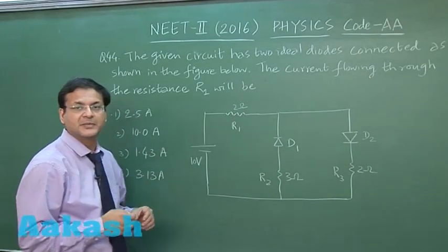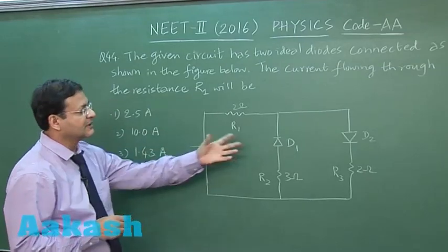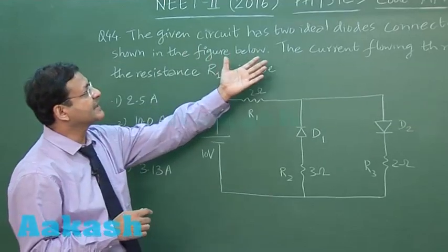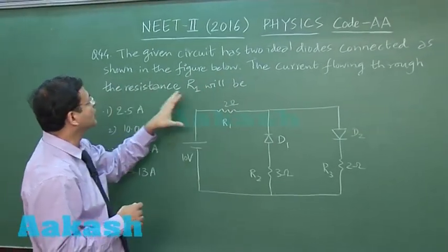This question 44 is a very basic question in which you have been given 2 ideal diodes. It is based on this diagram. It says that the given circuit has 2 ideal diodes connected as shown in the figure.